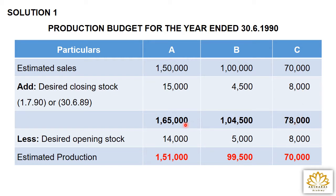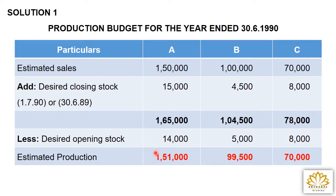Now less the desired opening stock from the total. Opening stock given in the question: A = 14,000; B = 5,000; C = 8,000. Subtracting gives estimated production: A = 1,65,000 − 14,000 = 1,51,000; B = 1,04,500 − 5,000 = 99,500; C = 78,000 − 8,000 = 70,000. That is the solution for sum number 1.